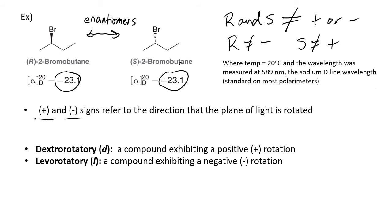The plus and minus simply tell us the direction that the light is rotated. Dextrorotatory (D) means a positive direction, and levorotatory has a negative rotation. These terms are typically used for amino acids and carbohydrates.